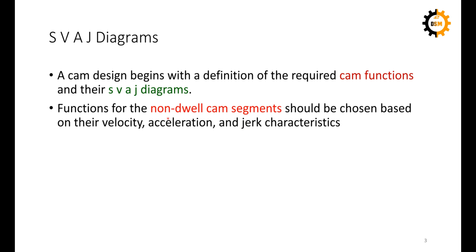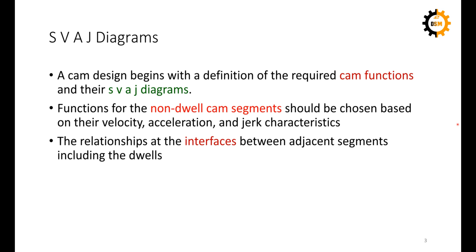Non-dwell segments are those segments in which the follower is not rising or falling — it is stationary at a single point while the cam is continuously rotating. When defining functions in SVAJ diagrams for velocity, acceleration, jerk, and displacement, the interfaces where dwell and non-dwell segments connect are very important, so we must carefully consider what type of interfaces they have.